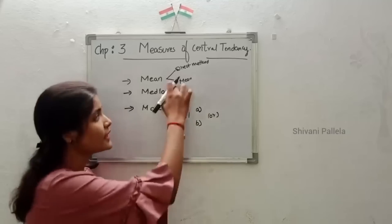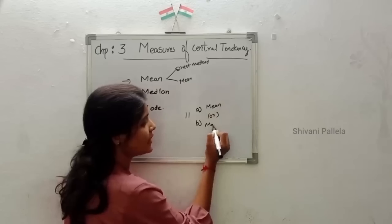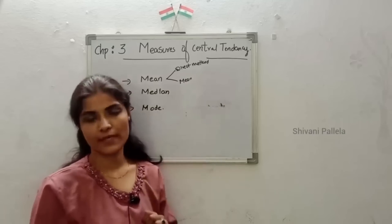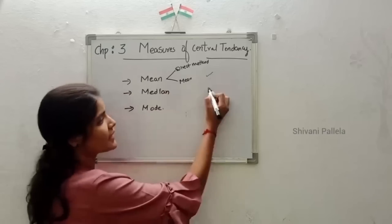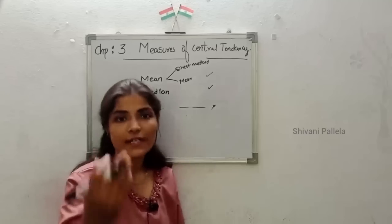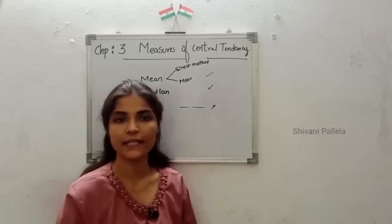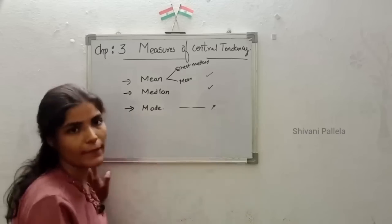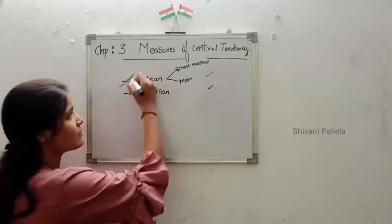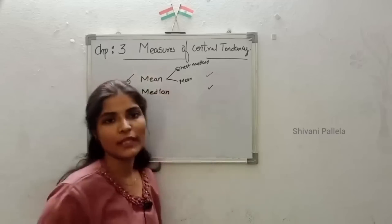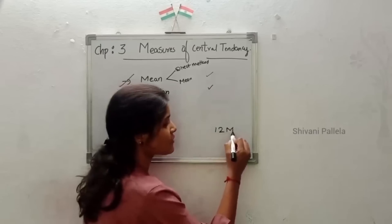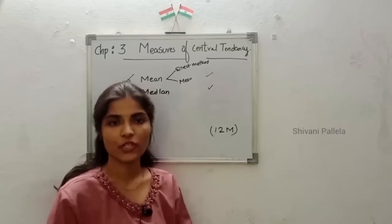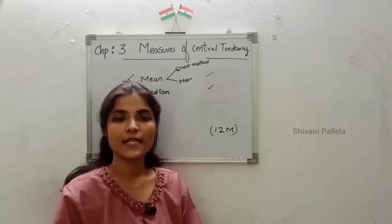You have an OR option and only 3 topics. If they ask mean, the OR option will be median; if they ask mode, it will be median. My suggestion is to prepare any 2 topics. Mean is easy, median is easy, but mode is a little bit difficult. With exams in 5 to 6 days, my suggestion is to keep mode as a choice and focus on mean and median. One question will definitely be asked for multiple marks in Part B.